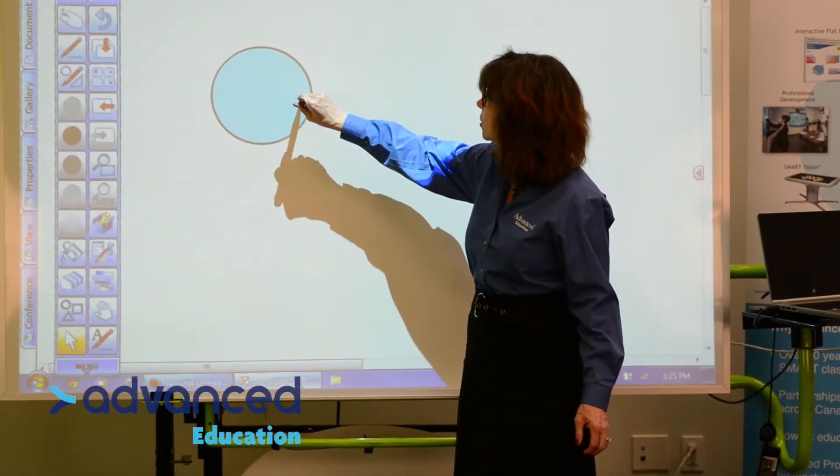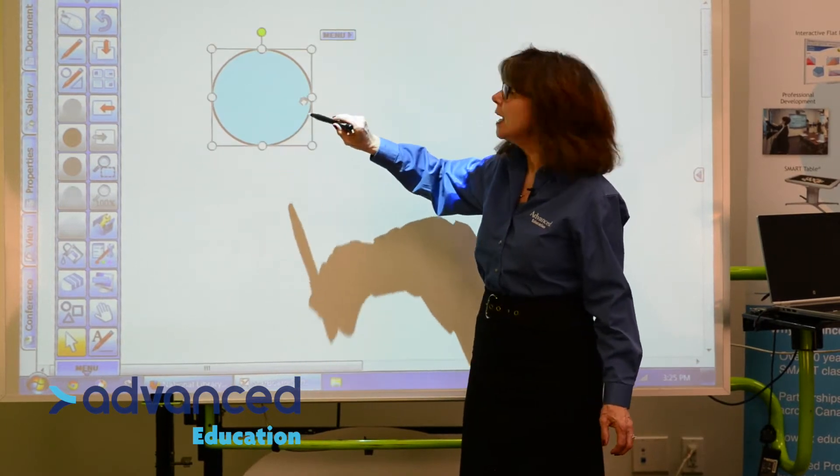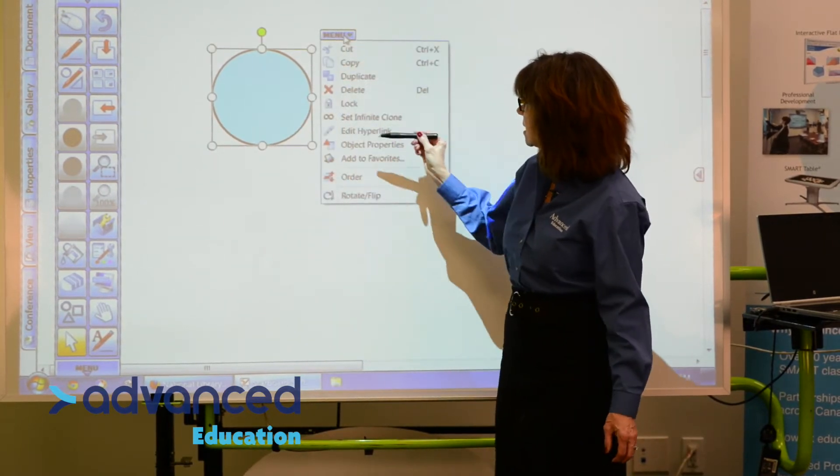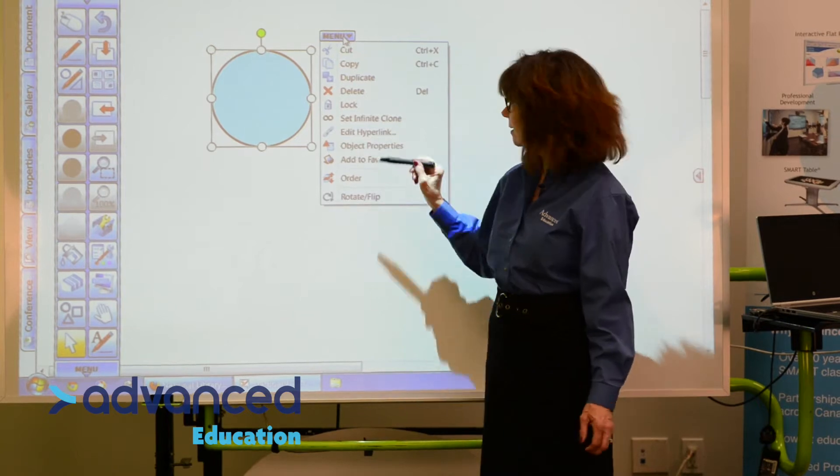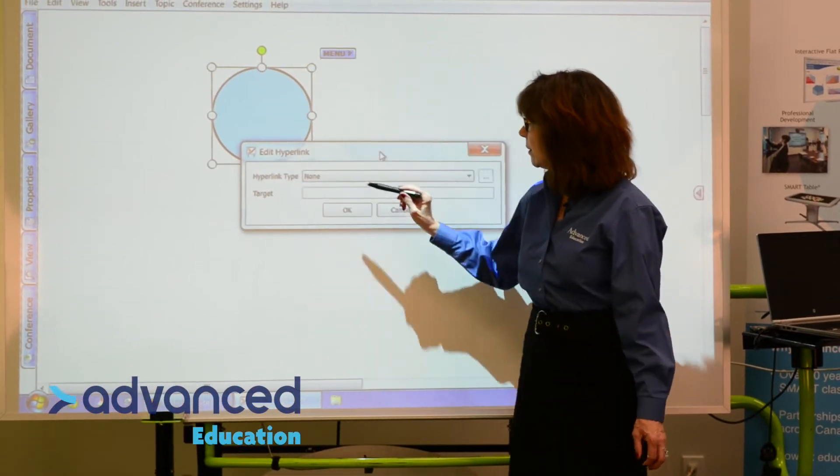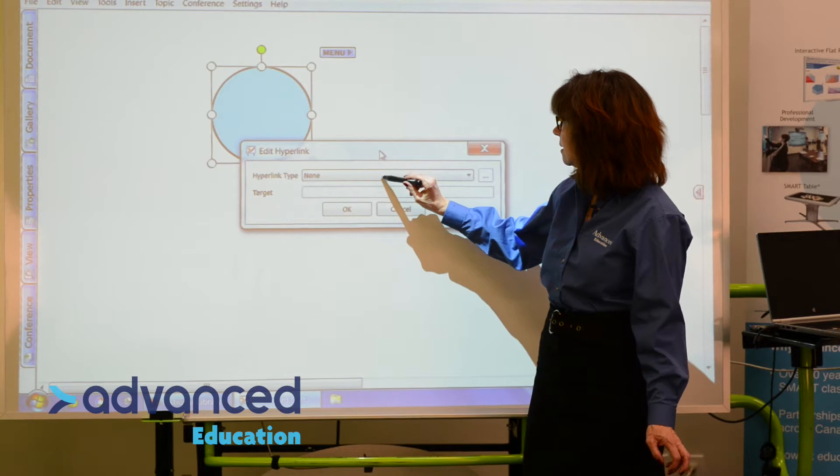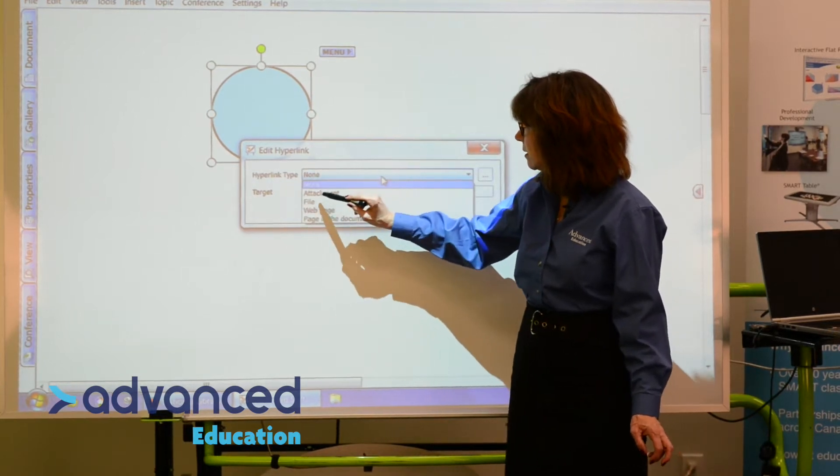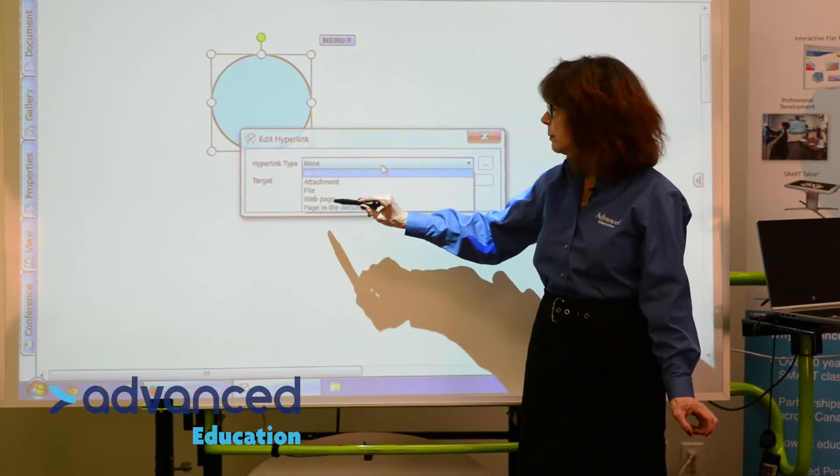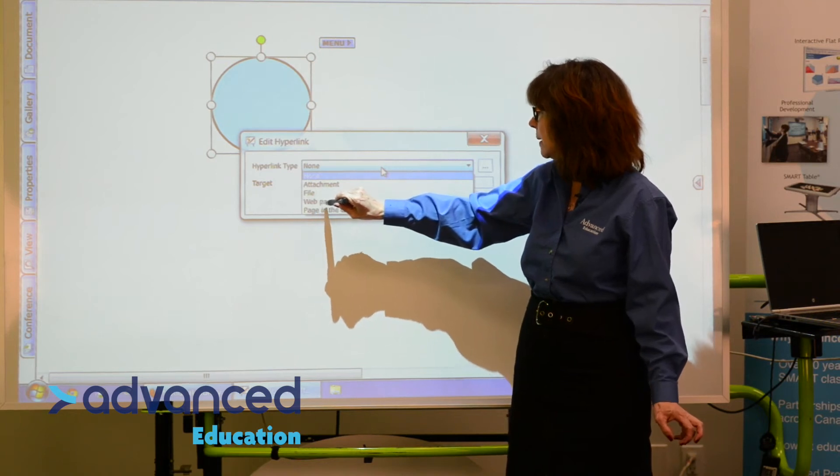And I'm again going to tap on the circle and choose the menu because I want to edit a hyperlink. Now we have to choose the type of hyperlink we want, and it can be an attachment or a file.